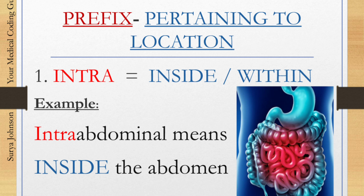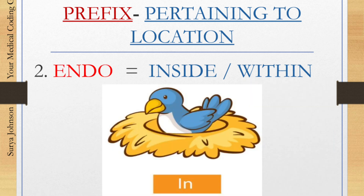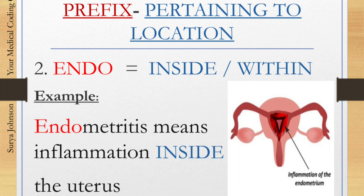The second one is 'endo.' Endo is also a prefix meaning within or inside — the same as intra. Example: endometritis. Endo means inside the uterus.